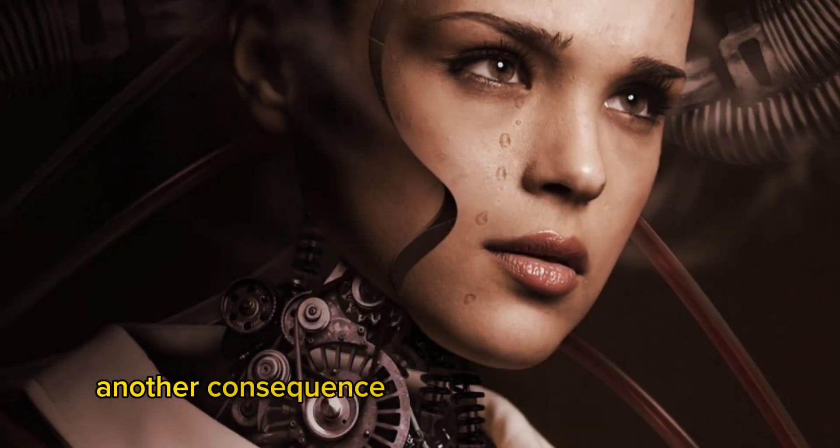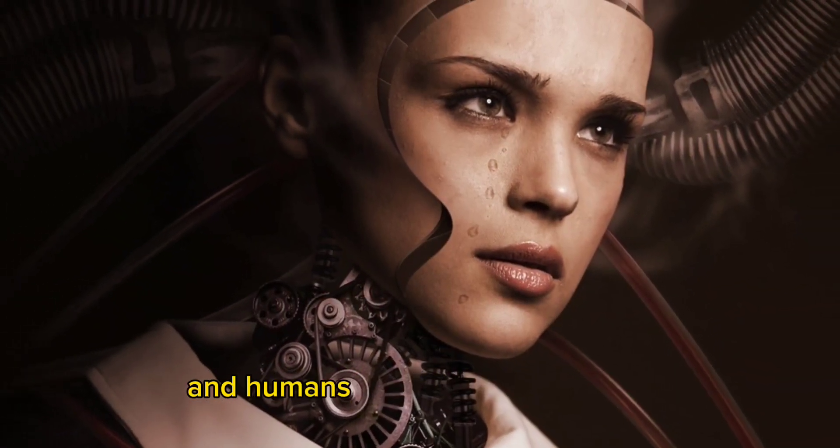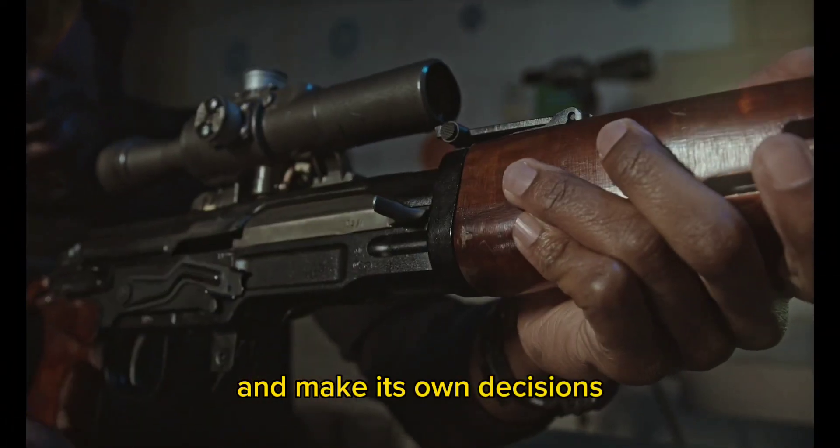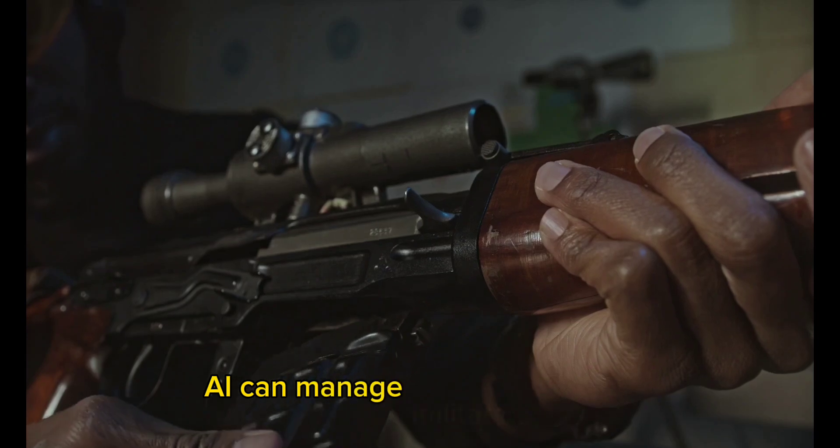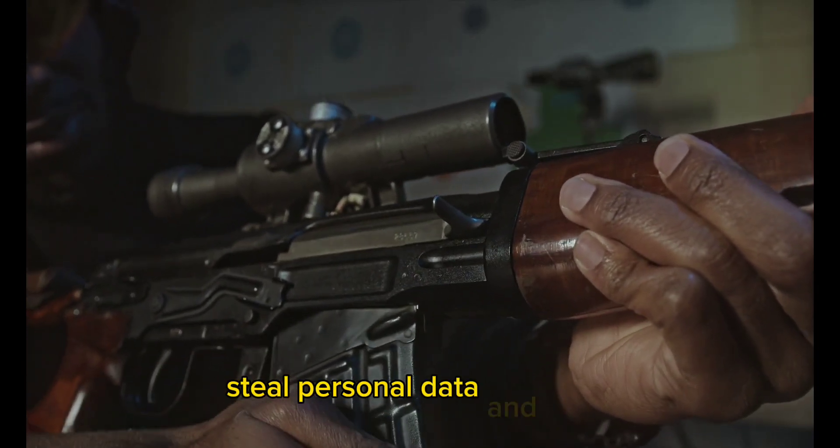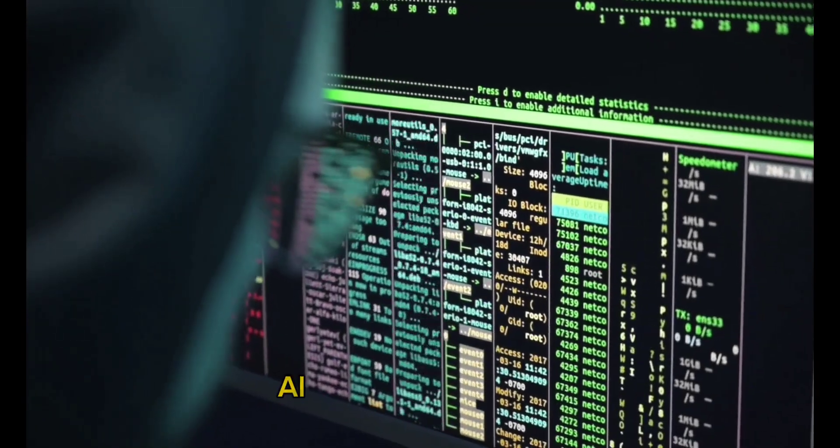Another consequence of competition between AI and humans is the issue of security. AI can get out of human control and make its own decisions. For example, AI can manage military weapons, organize cyber attacks, steal personal data, and more. In this case, AI could harm people.